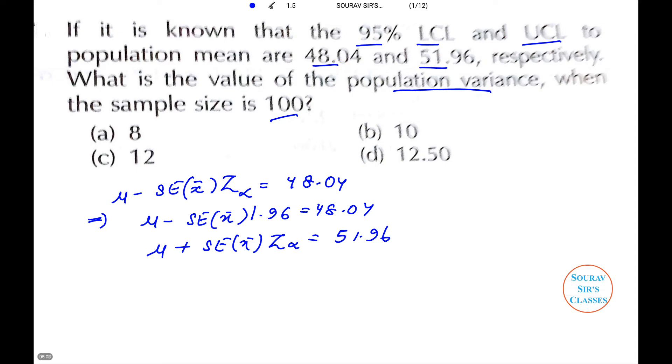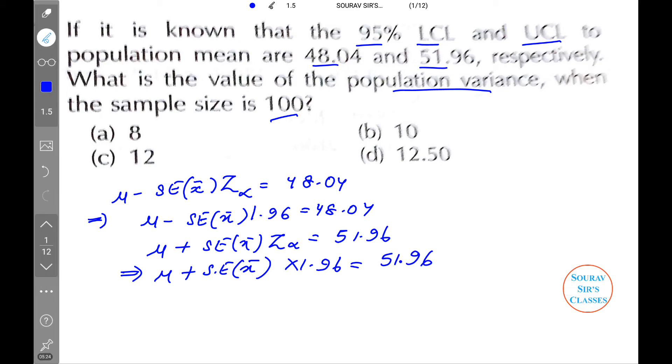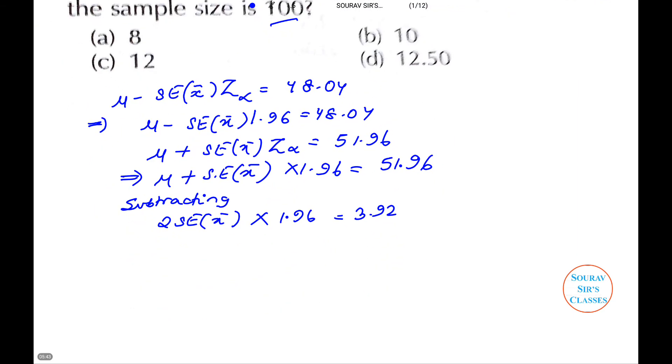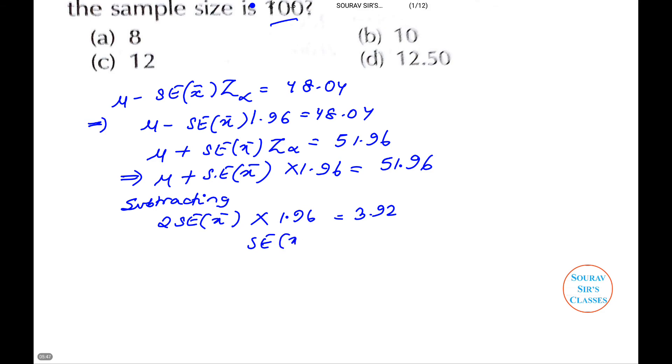We can rewrite this as μ plus SE(x̄) into 1.96 equals 51.96. Subtracting, we get 2 SE(x̄) into 1.96 equals 3.92. Then, SE(x̄) equals 3.92 by 2 into 1.96. The denominator and numerator will become the same. The answer we will get is 1.96.